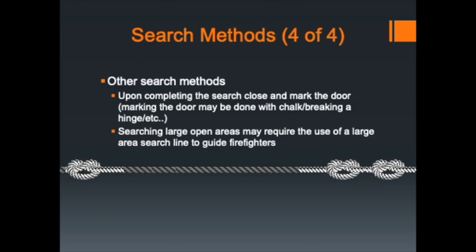Both trucks and the rescue carry a search rope — 200 feet long with a knot every 20 feet. The knots indicate how far from the anchor point you are: one knot is 20 feet, two knots is 40 feet, three knots is 60 feet. Multiply the number of knots by 20 to get your distance. You can also use a 20-foot tag line that attaches at a knot on the main rope, allowing you to work off that point and giving you a fixed reference to navigate back out of the building.